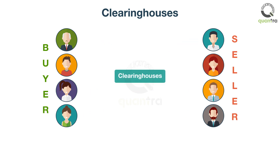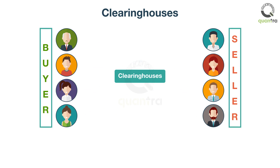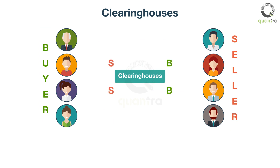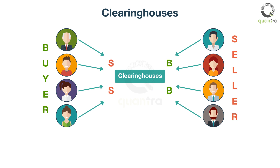These entities are appointed and qualified by the exchange. They are intermediaries between buyers and sellers of financial instruments. They take the opposite position on each side of a trade — that is, they will act as a seller for every buyer and a buyer for every seller. They exist to ensure the smooth functioning of financial markets and ensure that transactions happen as planned.